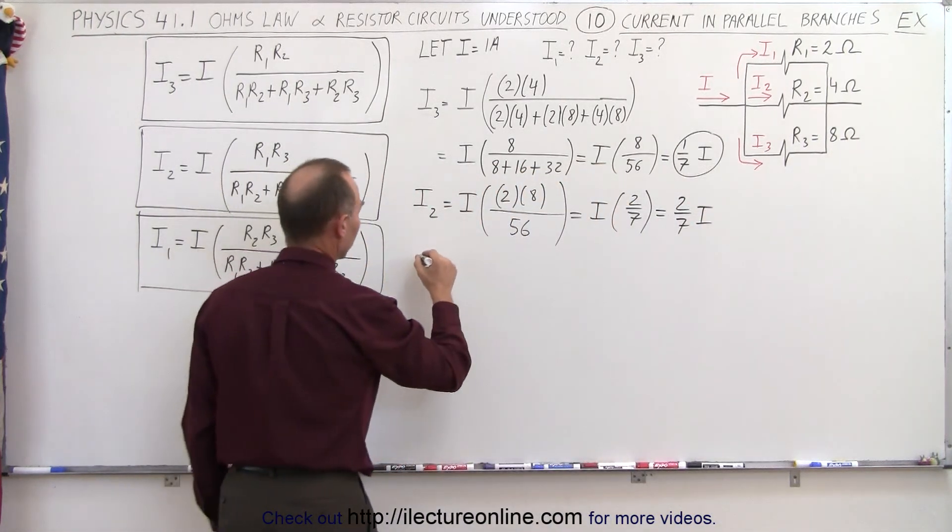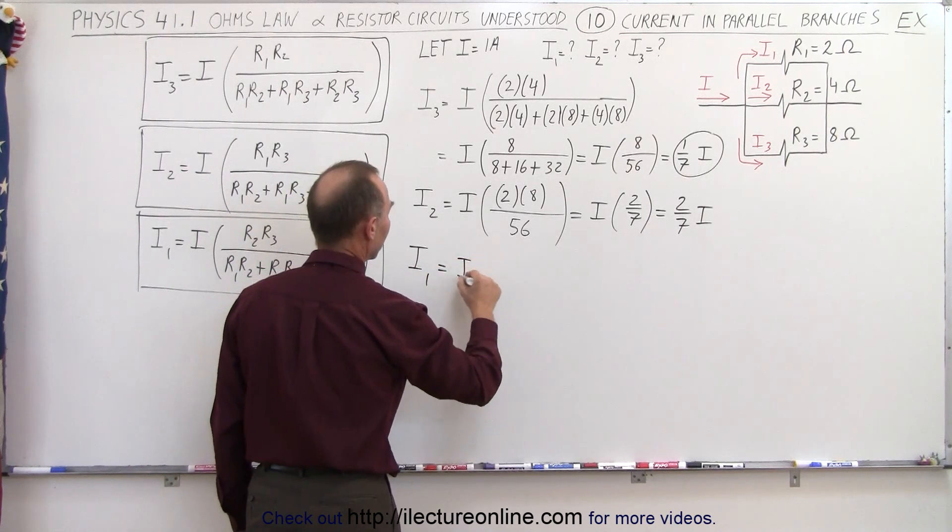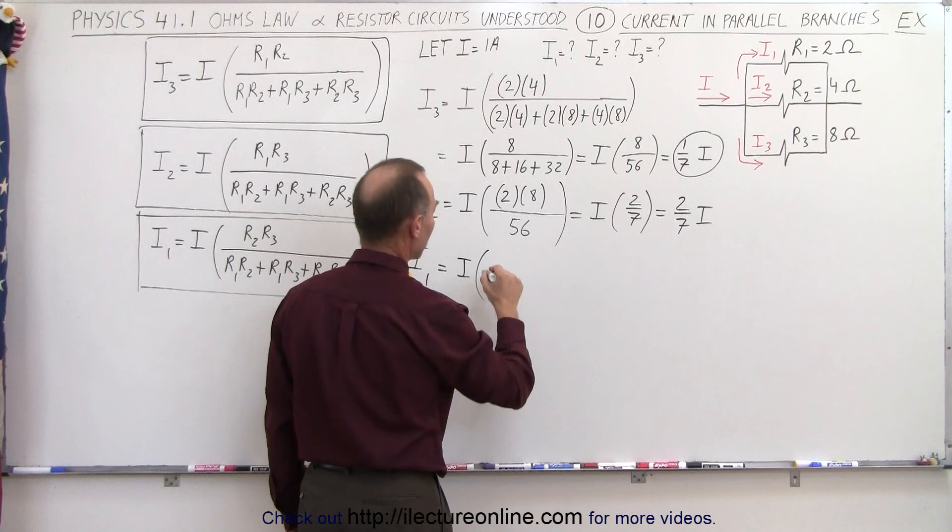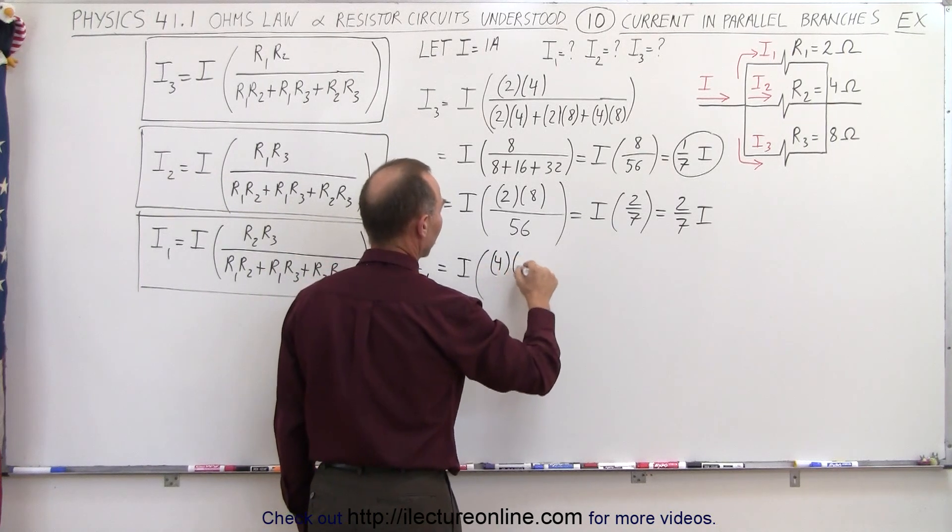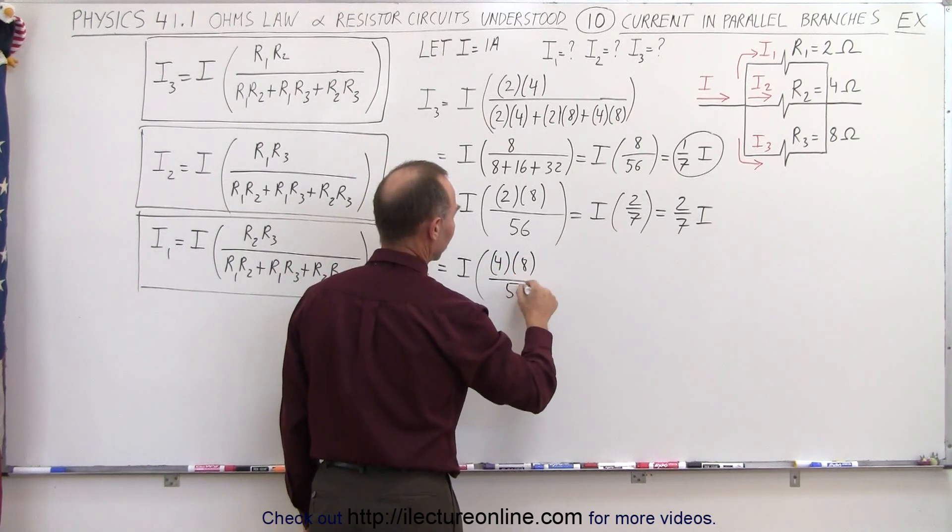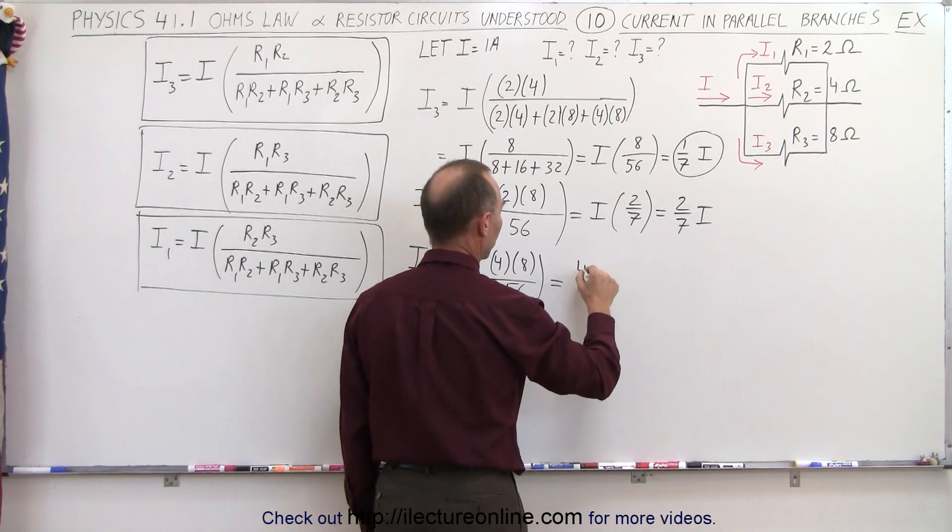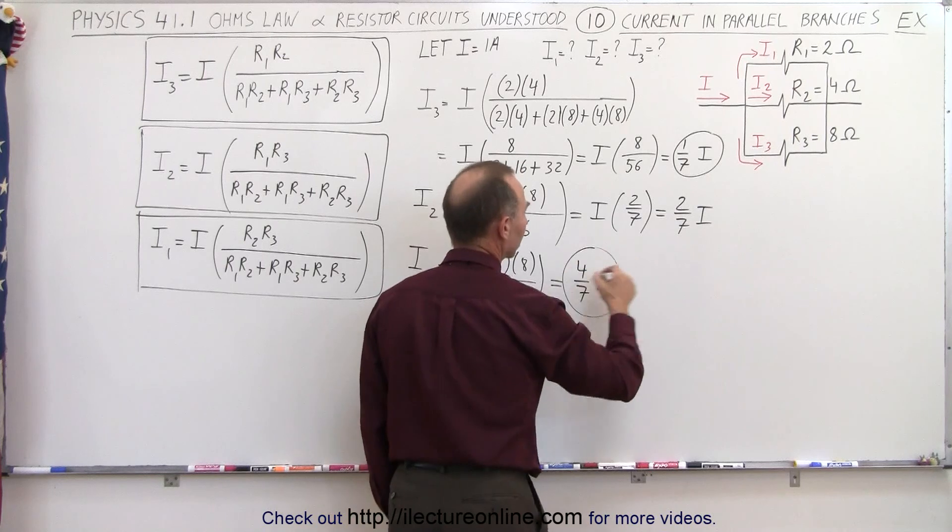And for the top branch, I1, that's equal to I times R2 times R3, so that would be 4 times 8 divided by 56, which is 1/7th times 4, or 4/7ths I, just like what we predicted.